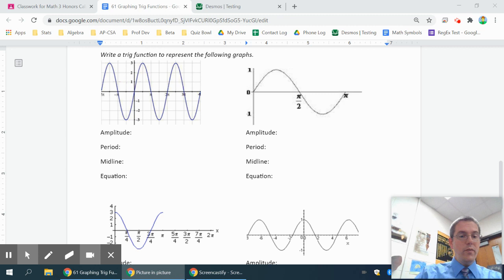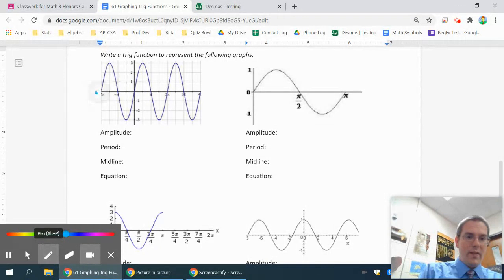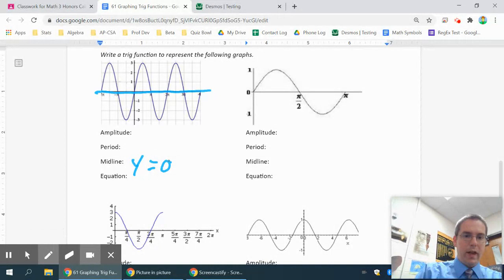Okay, writing a trig function. The first thing I need to do is figure out some of the properties of the graph. It's usually not listed in this order, but the best one to start with is the midline. The line through the middle of this first graph would be y equals 0. Amplitude is the distance from the midline to the maximum. So in this case, that's 3.